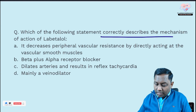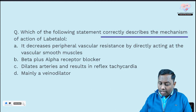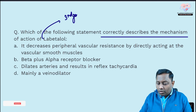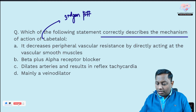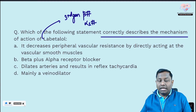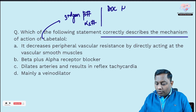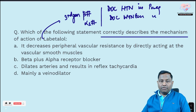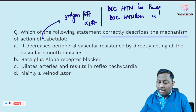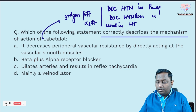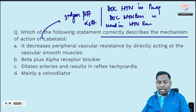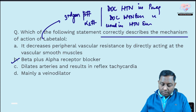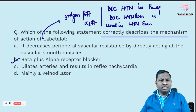Third question: which of the following correctly describes the mechanism of action of labetalol? Labetalol is a third-generation beta blocker. In addition to beta blockade, it also has alpha-1 blocking properties. It is the drug of choice for hypertension in pregnancy and hypertensive emergency in pregnancy, and can also be used in other hypertensive emergencies. The correct answer is: beta plus alpha-1 receptor blocker.